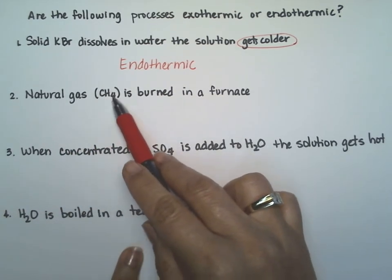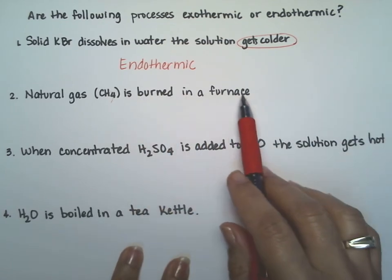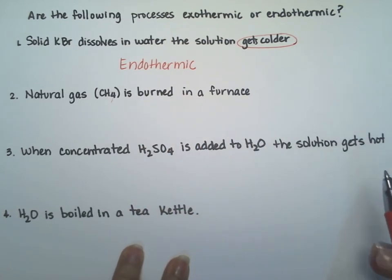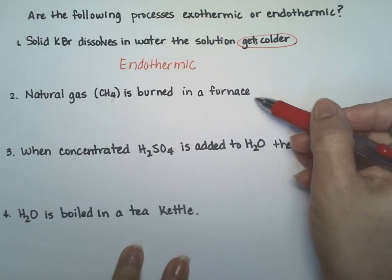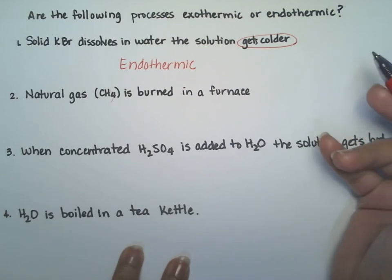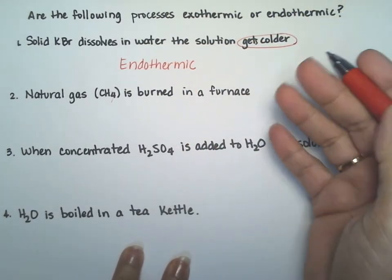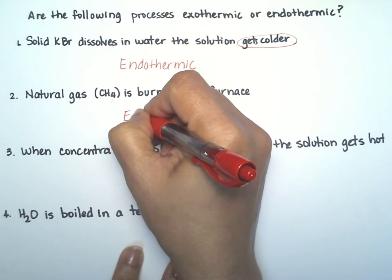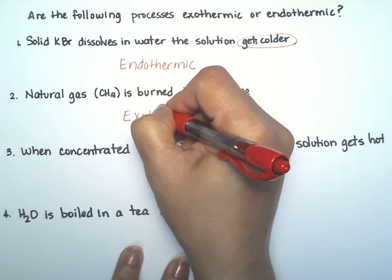Natural gas, which is methane, is burned in a furnace. Whenever you're burning methane or any other organic compound, you're going to release energy. So heat is going to be released as you burn any organic compound and that combustion is going to be an exothermic reaction.